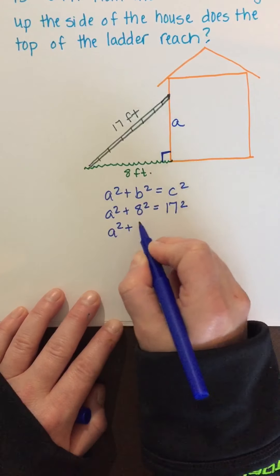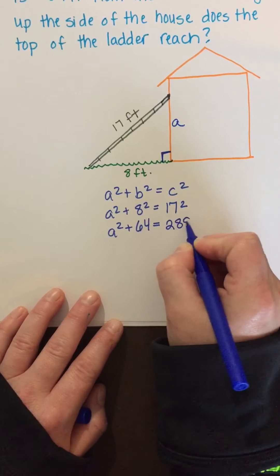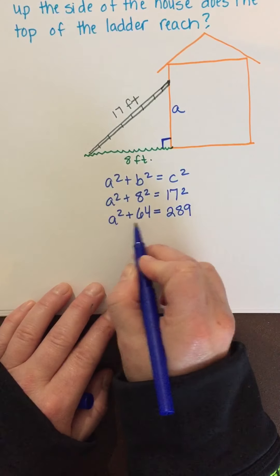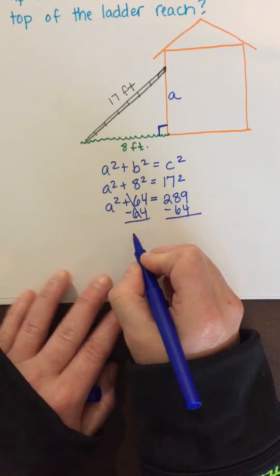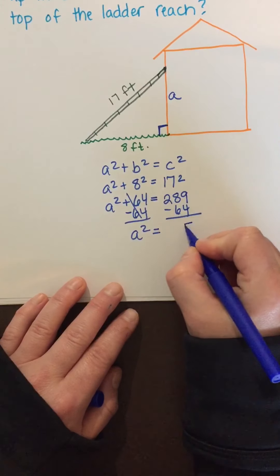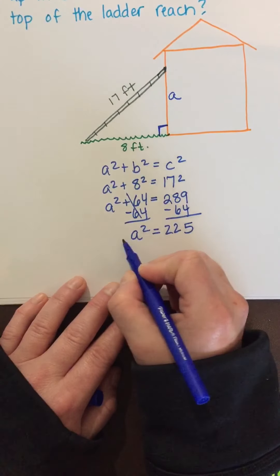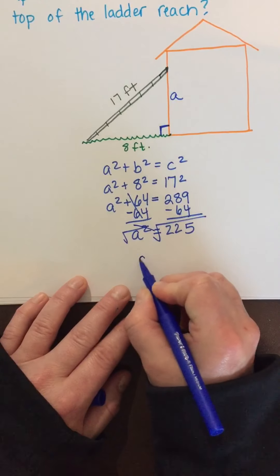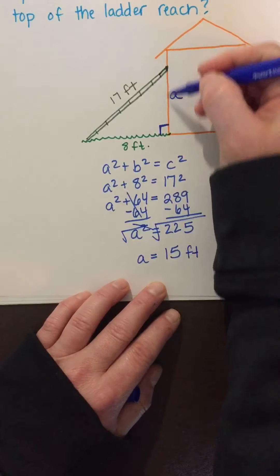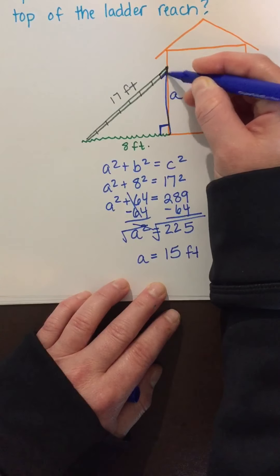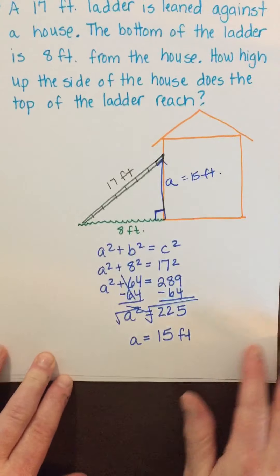8 squared is 64 and 17 squared is 289. To get a by itself, subtract 64 from both sides: 289 minus 64 equals 225. Take the square root of both sides — that cancels the square — and the square root of 225 is 15. So a equals 15 feet, meaning the ladder reaches 15 feet up the side of the house.